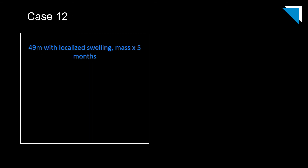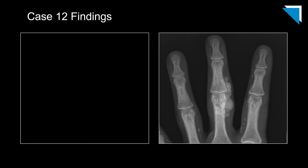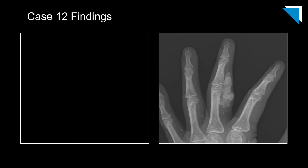Next, let's take a look at a 49-year-old man with localized swelling and a mass for five months. Here is a coned-down PA radiograph of the middle finger and the corresponding oblique view. You can appreciate the globular radio-opacities in the soft tissues along the volar radial aspect of the proximal interphalangeal joint. Notice how smoothly marginated these are, relative to the hydroxyapatite deposition we saw in the last case.